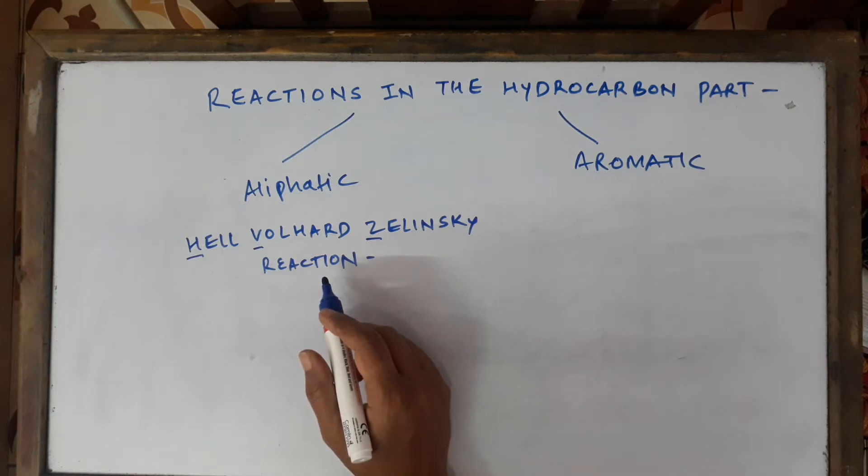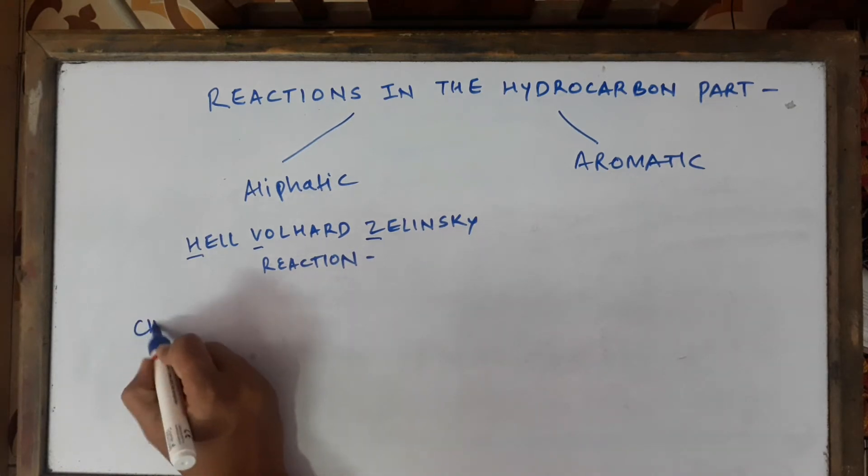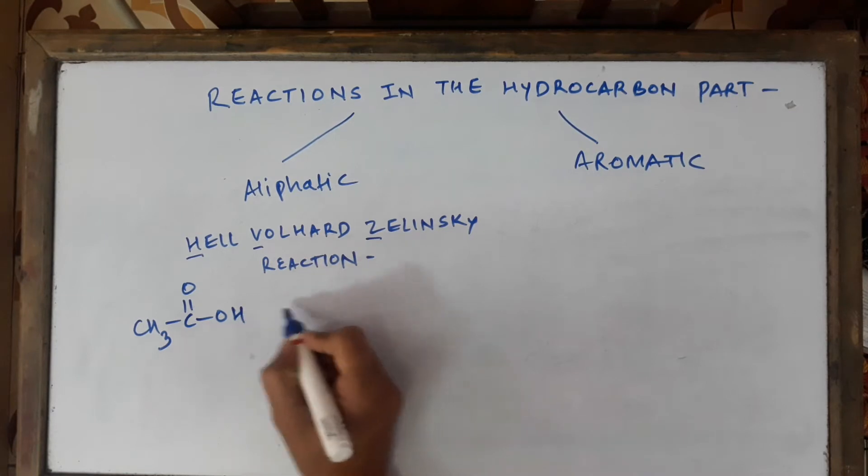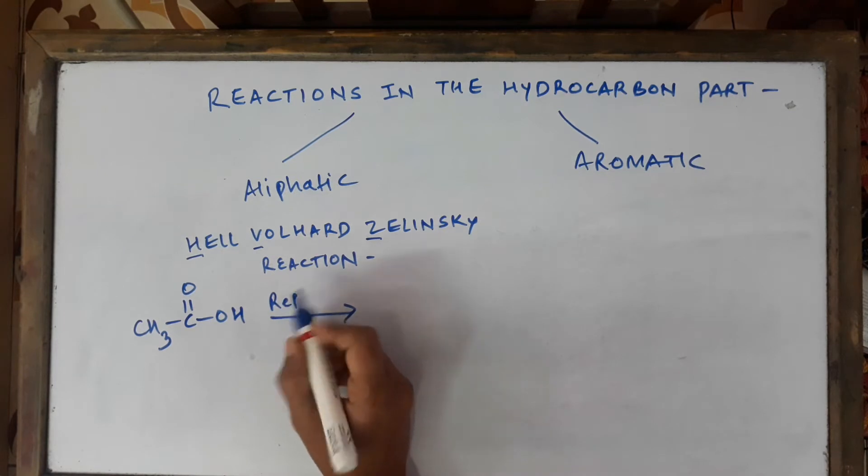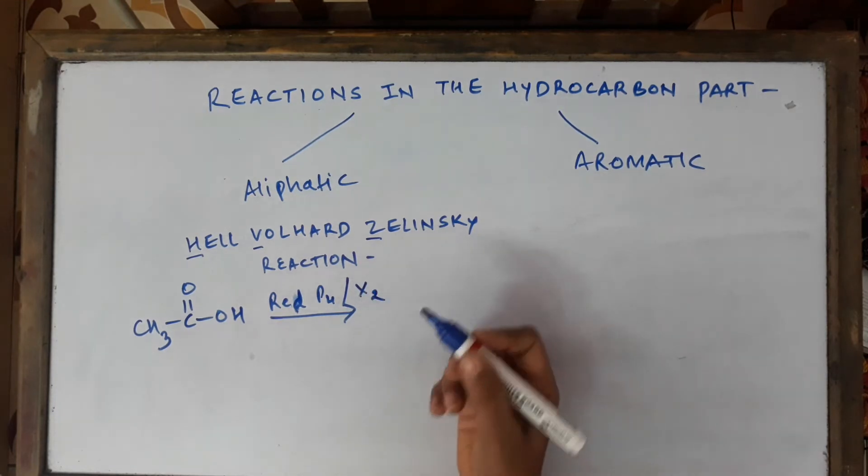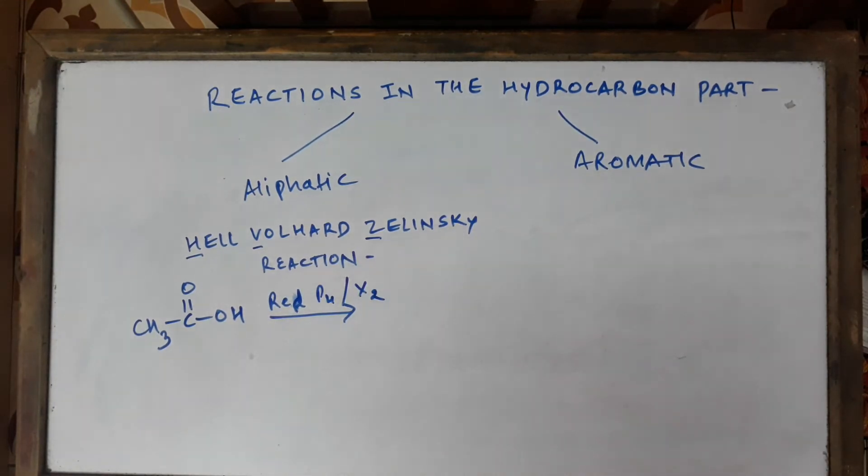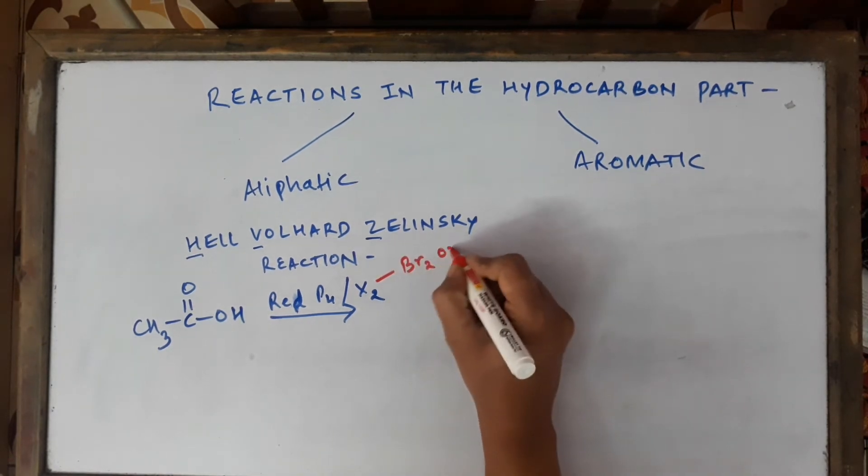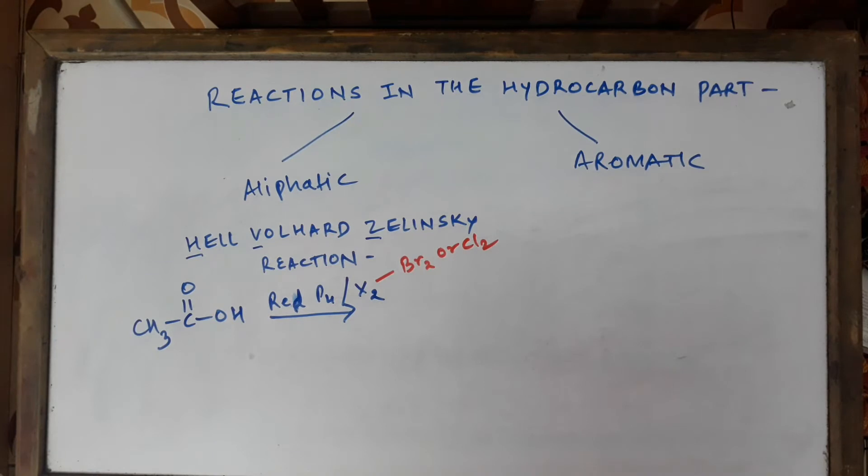In the Hell-Volhard-Zelinsky reaction, we carry out alpha halogenation of a carboxylic acid. We'll take one example like CH3COOH and carry out its halogenation using red phosphorus and halogen. Red phosphorus because it's stable, and we will use halogen. What halogen are we going to use here? We can use bromine.